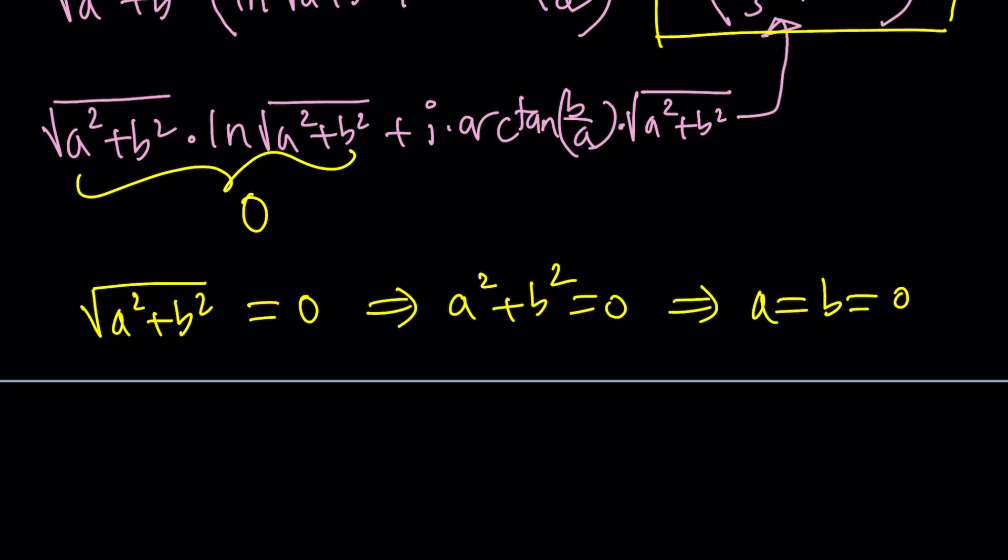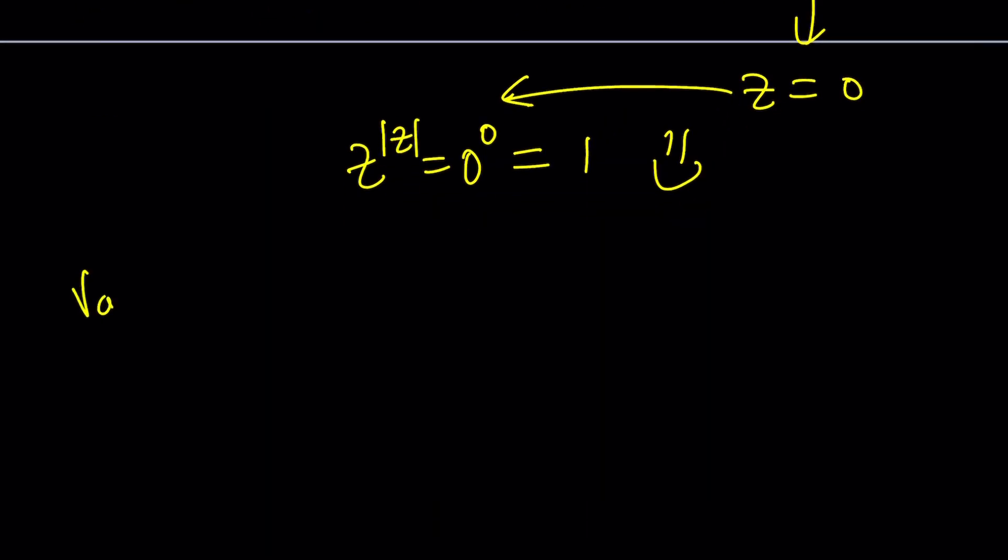But if this happens, then that means z is equal to zero and we have z to the absolute value of z, which is zero to the power of zero. As you know, that's equal to one, right? I made a video about it on my other channel. You can check it out. So that's not the case. Therefore, this is not zero.